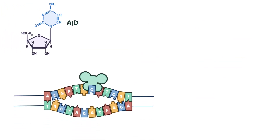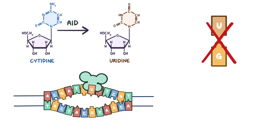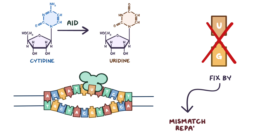The way the AID enzyme works is by turning a cytidine into a uridine in the DNA. Uridine is completely foreign to DNA — typically only found in RNA — and uridine can't properly bind to the guanosine nucleoside on the opposite DNA strand. As a result, the cell tries to fix this mistake in one of two ways: either mismatch repair or base excision repair.